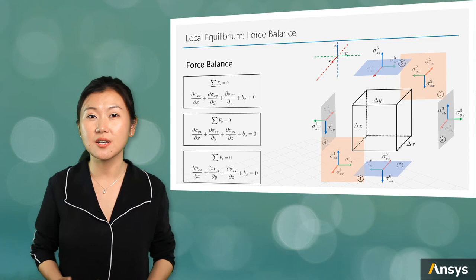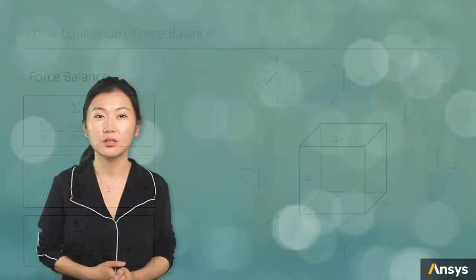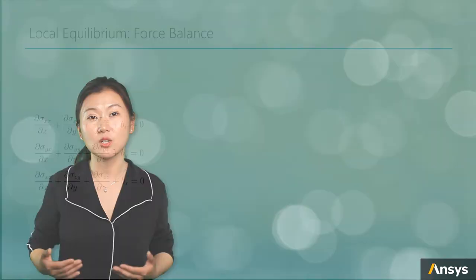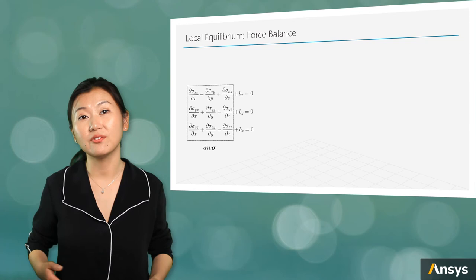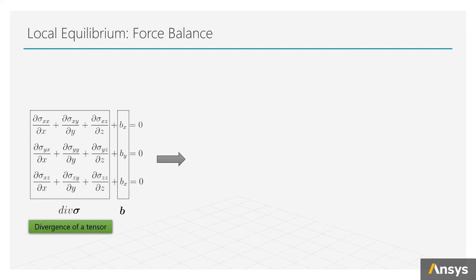Doing summation on force in y and z direction will lead to similar results. And these three equations are the local equilibrium we're looking for. We call the first three items of these three expressions the divergence of a tensor. If we write these equations by tensor and vector format instead of individual components, the local equilibrium can be even more concise as represented by this single equation.